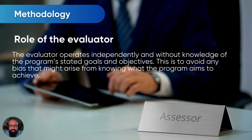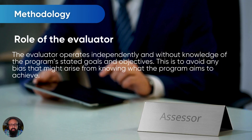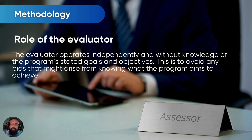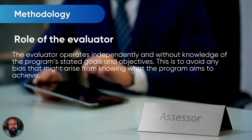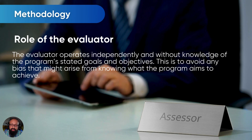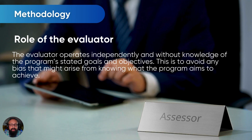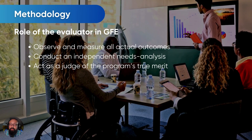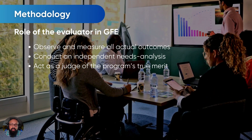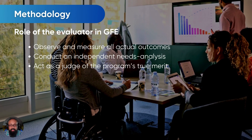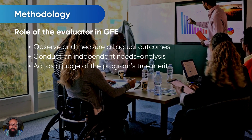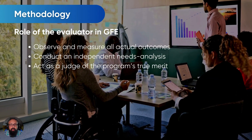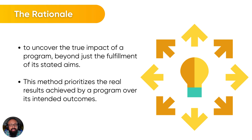What is the role of the evaluator? In this method, he or she operates independently without the knowledge of the program's stated goals and objectives, and this is to avoid any type of bias that might arise from knowing what the program aims to achieve. The role of the evaluator is to observe and measure actual outcomes, conduct an independent analysis, and act as a judge of the program's true merit.